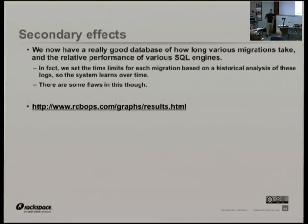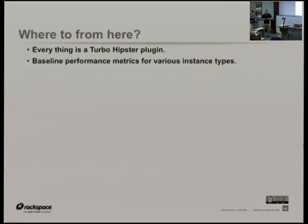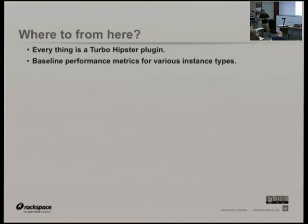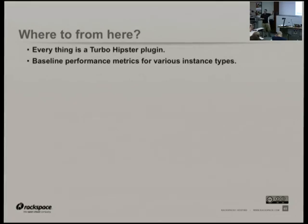I actually personally think that maybe we shouldn't be using SQL databases at all. But we need to get away from having ORM objects all over the code base before we can talk about doing anything else. So where to from here? Everything feels like a Turbo Hipster plugin to me now, and I think Turbo Hipster is a generically useful tool if you're using Zuul. It wouldn't be that hard to write a Zuul plugin that used GitHub pull requests instead of Gerrit. We have baseline performance metrics for a bunch of instance types. Rackspace runs our production databases for public cloud in instances on the cloud, so this has a direct correlation to how production performance would feel.